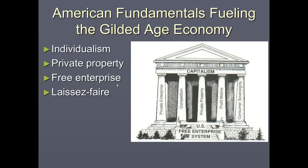Looking at capitalism as a whole — the free enterprise system we live by today — there are several pillars that govern it: private entrepreneurship, which gives people the opportunity to create their own businesses under American law; competition among companies, which helps drive prices down; the right to private property; the right to profit motive; and consumer sovereignty, where consumers have the choice whether or not to buy from a company.